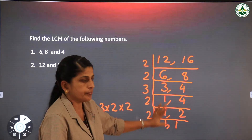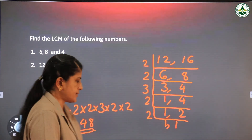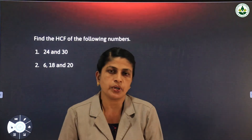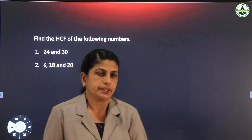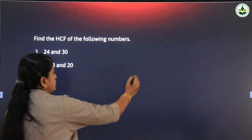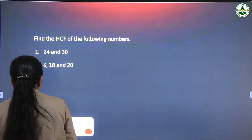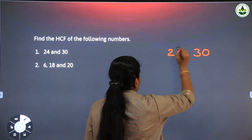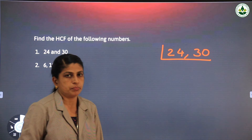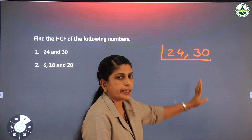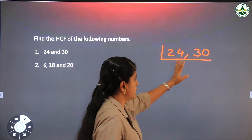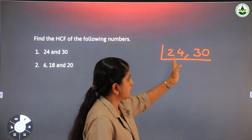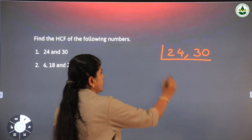Study this method — we are following it in higher classes. Now find the HCF by the division method. The numbers are 24 and 30. Here also we divide by prime numbers only. Both 24 and 30 end in 4 and 0, meaning they are even numbers, so we can divide both by 2.